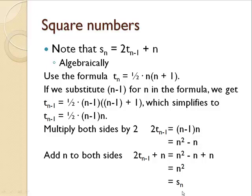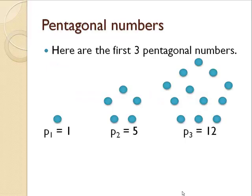Other figurate numbers exist. Here are the first 3 pentagonal numbers, so named because these dots have been arranged in a pentagon. The first pentagonal number is 1, the second is 5, and the third is 12. This second pentagonal number has 2 dots making up each side of the pentagon. This third has 3 dots making up each side, but also notice that the second pentagonal number, P sub 2, is embedded in there.